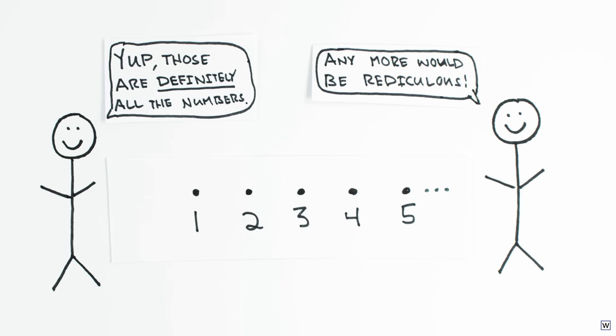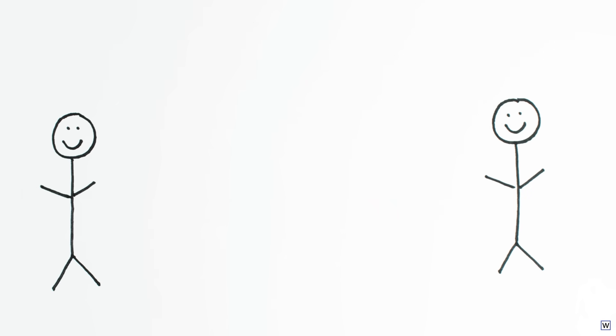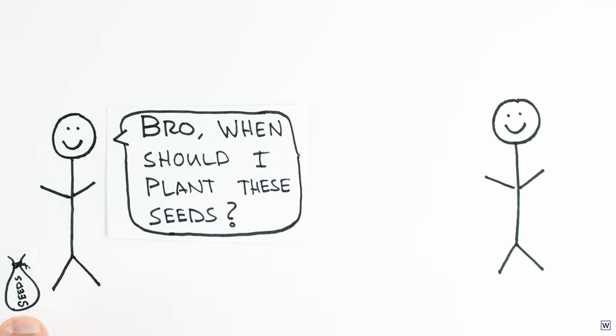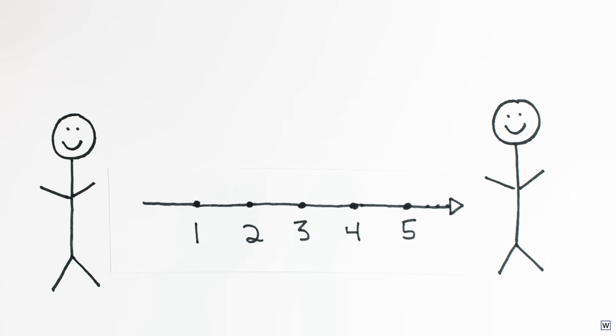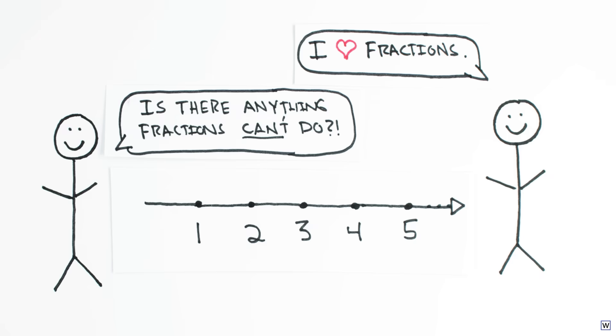As civilizations advanced, people needed answers to more sophisticated math questions. Like when to plant seeds, how to divide land, and how to keep track of financial transactions. The natural numbers just weren't cutting it anymore, so the Egyptians innovated and developed a new high-tech solution: Fractions. Fractions filled the gaps in our number line, and were basically cutting-edge technology for a couple thousand years.